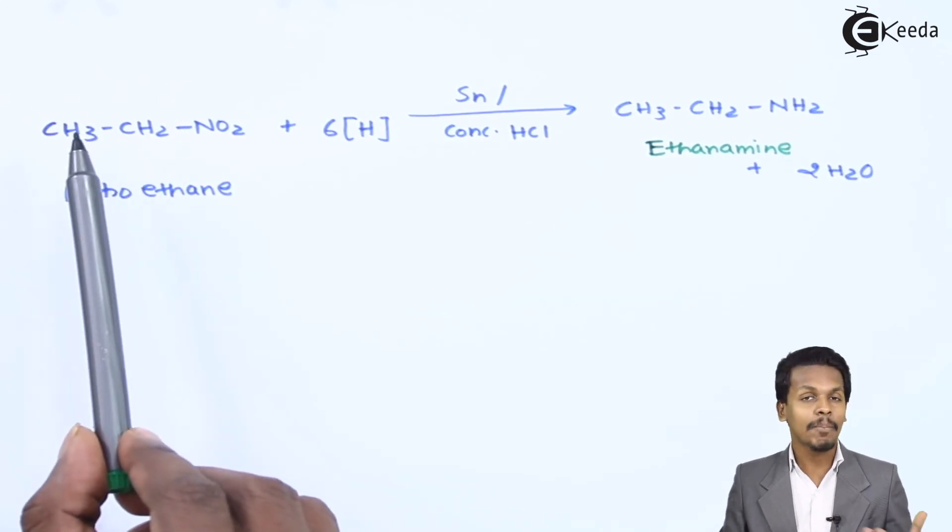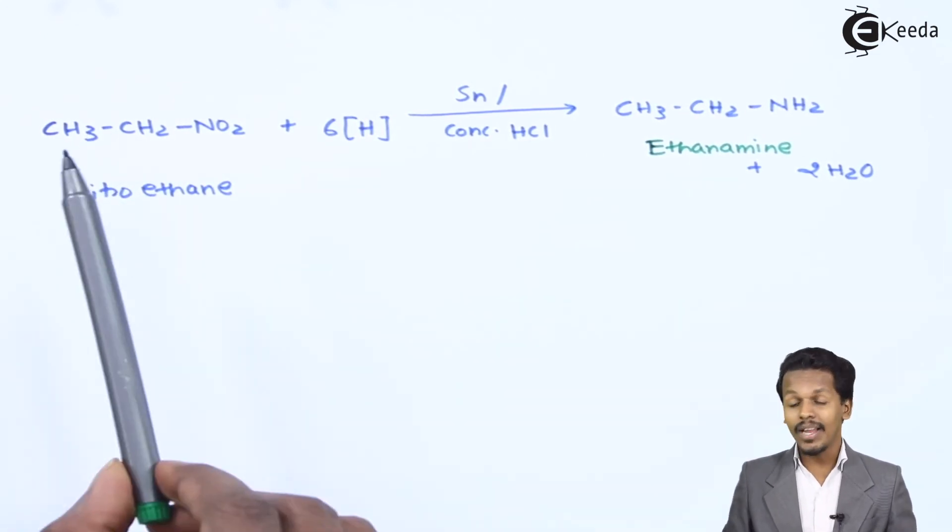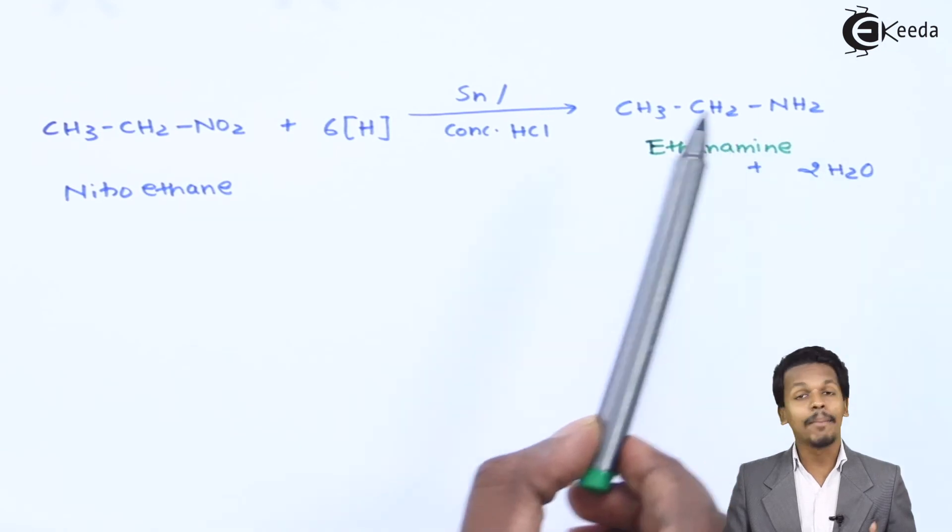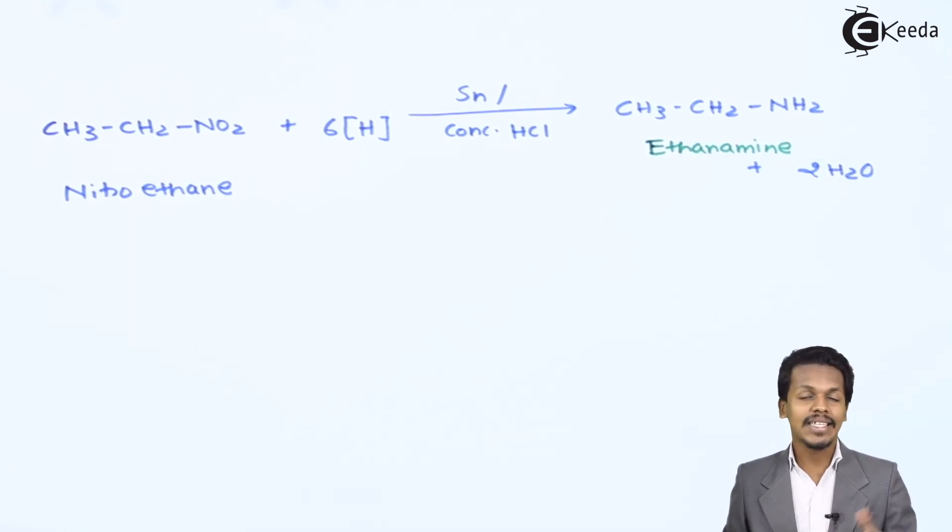If you observe, this is a primary nitroalkane. Based on that we have got a primary amine. By introducing tin and hydrochloric acid we can easily convert the nitro group into amine group.